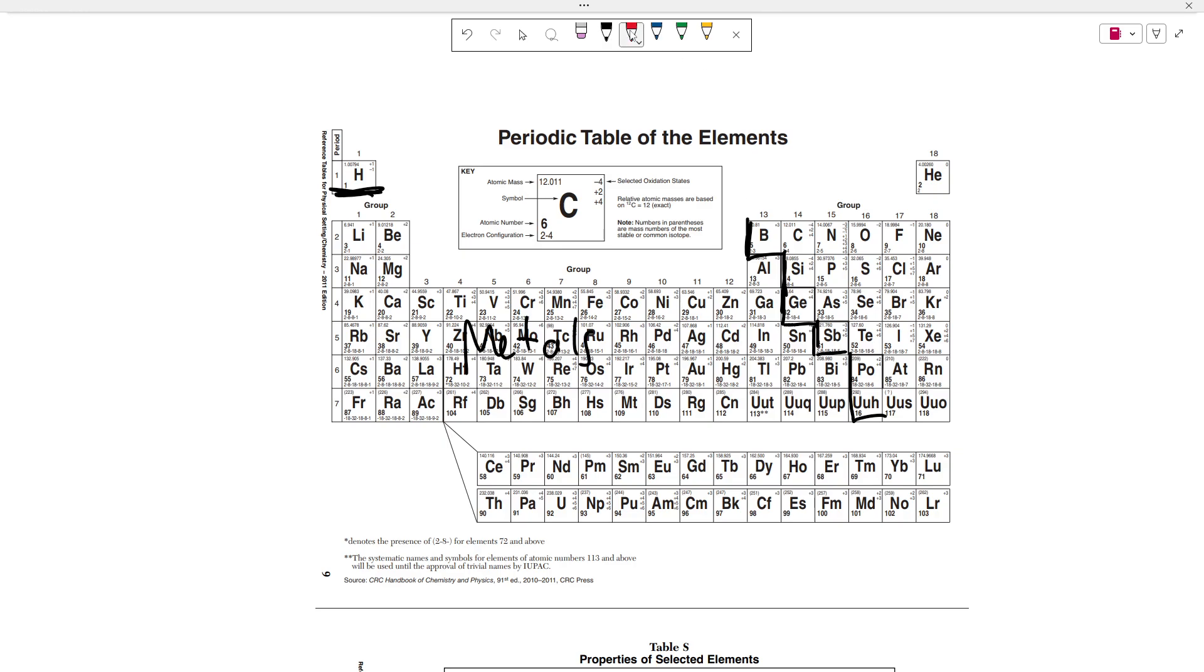Then the next type of elements that you have to worry about are to the right of this red line, including hydrogen. So to the right of this red line, including hydrogen. So everything over here is what we're going to call a non-metal.